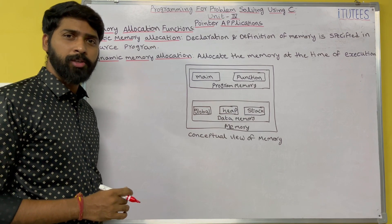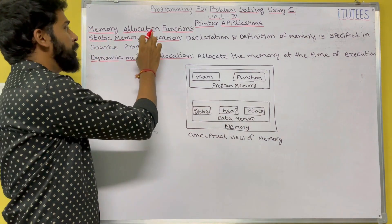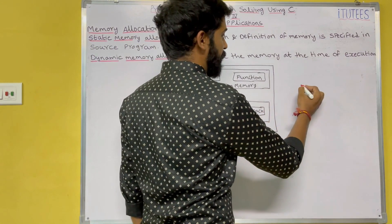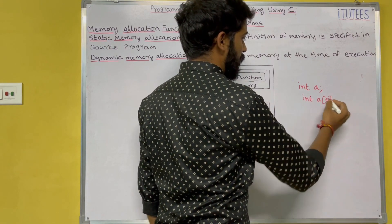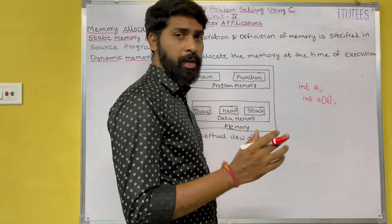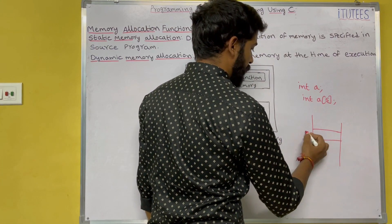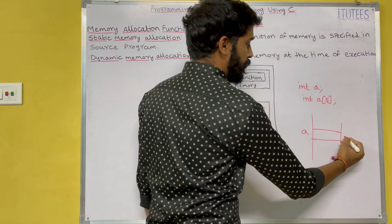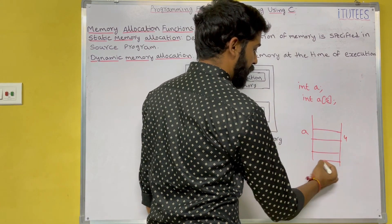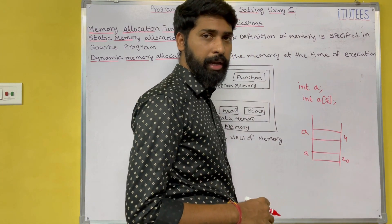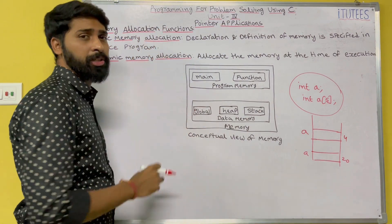Welcome to C programming tutorials. In this class we are going to learn about memory allocation functions. Memory allocation is what we do when we declare variables — for example, int a declares a variable which is a memory location allocating 4 bytes, and int a[5] allocates 5 into 4, which is 20 bytes of memory for the array a. This is memory allocation, but here we are talking about memory allocation functions.